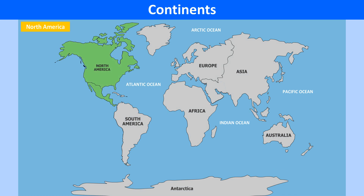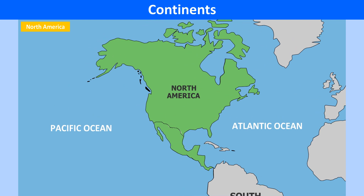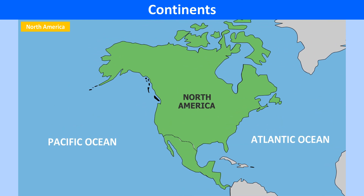North America is the third largest continent in the world. It is surrounded by the Arctic Ocean in the north, the Atlantic Ocean in the east and the Pacific Ocean in the south and west. North and South America are joined by the Isthmus of Panama. It also has the second longest coastline of 60,000 km. Some of the major rivers in this continent are Mississippi, Mackenzie, Red, Yukon and Lawrence.